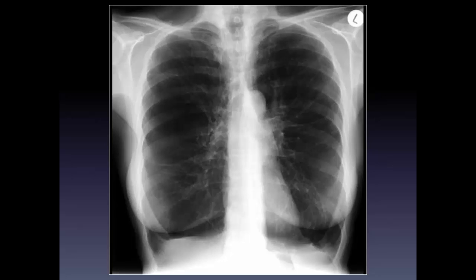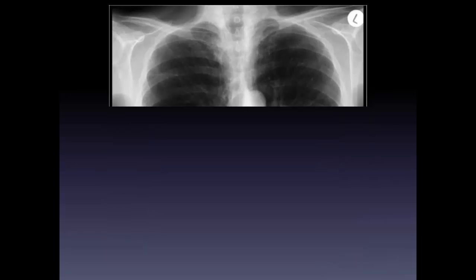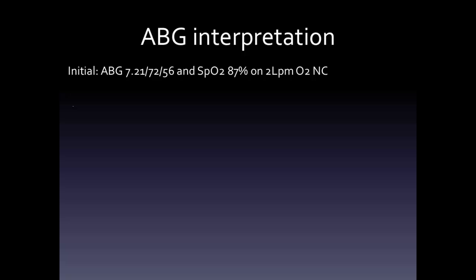Consider this patient: a 65-year-old male with severe COPD. He has an FEV1 of 45% predicted and requires two liters of oxygen by nasal cannula at baseline. He presents to your clinic with an acute exacerbation of COPD. Let's take a look at his initial ABGs. His initial ABG shows a pH of 7.21, PCO2 of 72, PO2 of 56, and an oxygen saturation of 87% on two liters of oxygen nasal cannula.